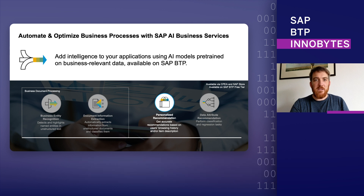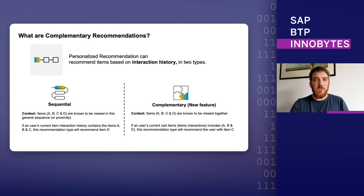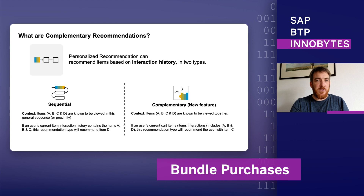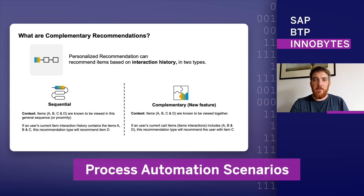One of the latest features we introduce is complementary recommendations — a way to recommend items that are known to be viewed together in a single session. This is useful for cross and upselling opportunities in bundle purchases, cart suggestions, or even process automation scenarios.